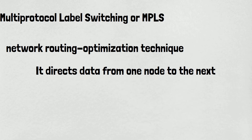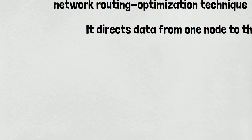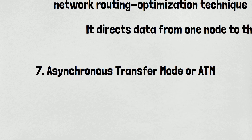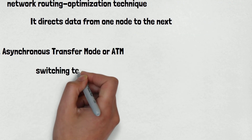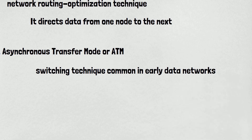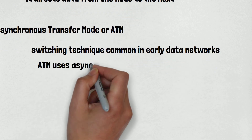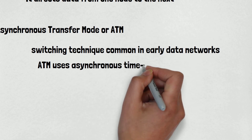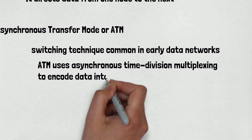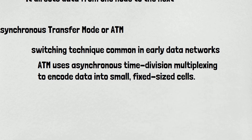MPLS directs data from one node to the next using short path labels rather than long network addresses, to avoid time-consuming table lookups. Number 7 is Asynchronous Transfer Mode, or ATM. It is a switching technique common in early data networks, which has been largely superseded by IP-based technologies. ATM uses asynchronous time division multiplexing to encode data into small, fixed-sized cells.